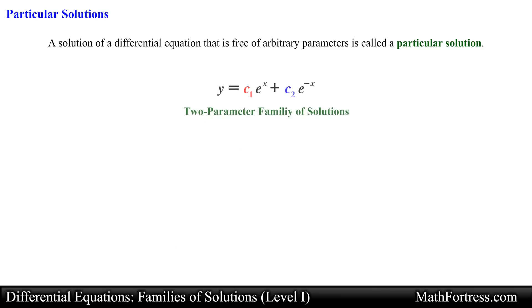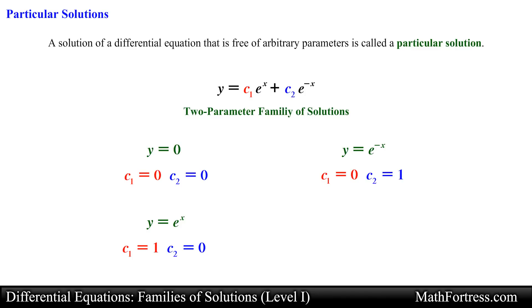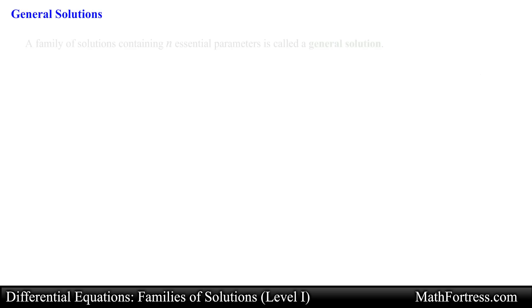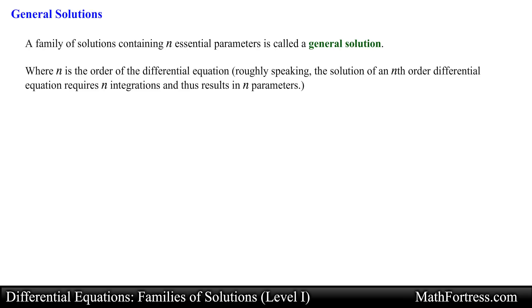In the same manner, the two-parameter family of solutions also contains infinitely many particular solutions, such as the trivial solution y equals 0 when both c₁ and c₂ equal 0; y equals e to the x when c₁ equals 1 and c₂ equals 0; and y equals 5e to the x minus 2e to the negative x when c₁ equals 5 and c₂ equals negative 2. A family of solutions containing n essential parameters is called a general solution, where n is the order of the differential equation. Roughly speaking, solving an nth-order differential equation requires n integrations, resulting in n parameters.